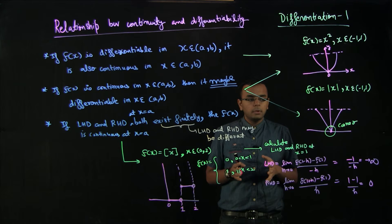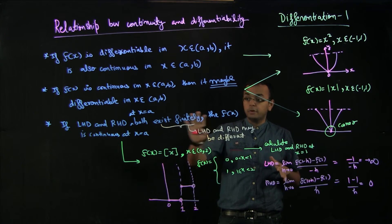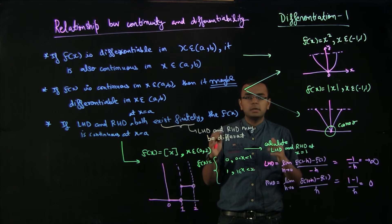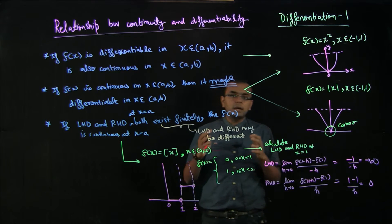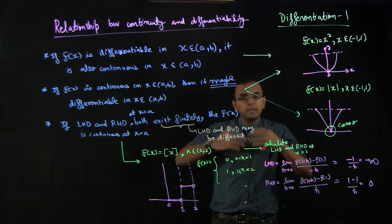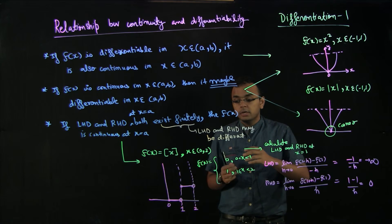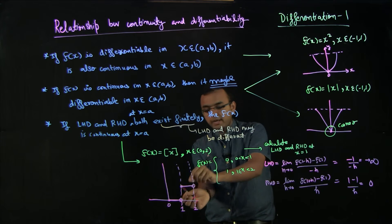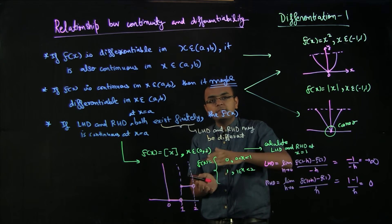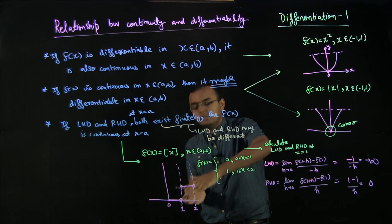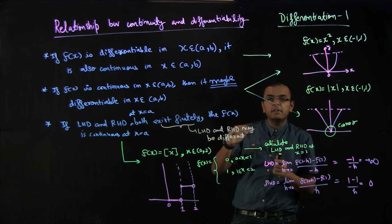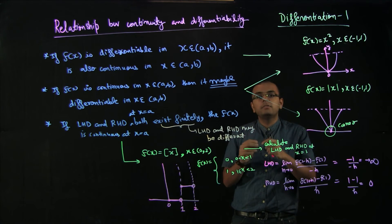So the left-hand derivative is infinity and the right-hand derivative is 0. The left-hand derivative does not exist finitely, and hence the function is discontinuous at x = 1. This makes sense: a derivative means the rate of change of f with respect to x, so whenever there is an infinite derivative, it causes a jump discontinuity.